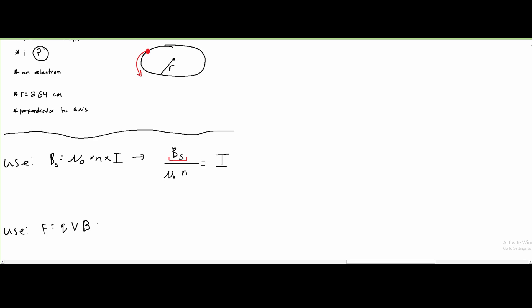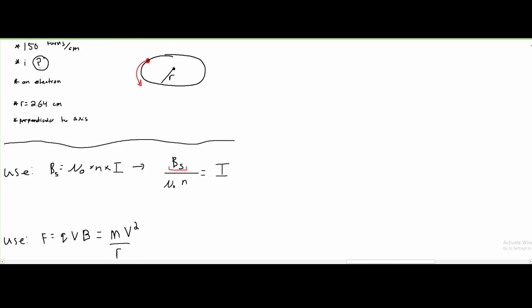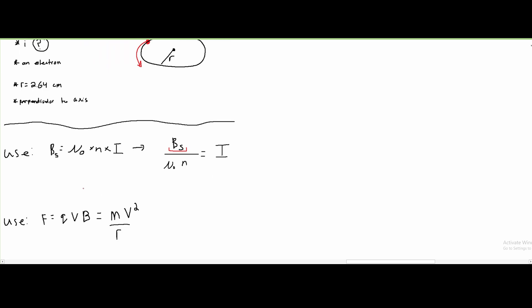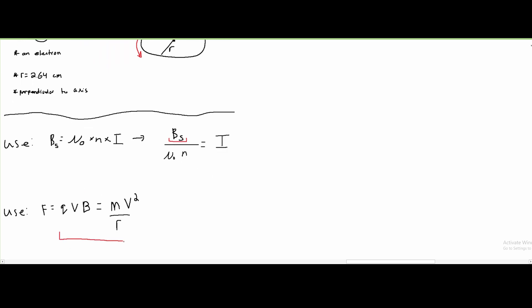So we have two unknowns. We can also use the formula for force, where we have mass times velocity squared divided by our distance. We have the mass of an electron, the velocity, and we know the radius. So from here, we're just going to focus on these two things.